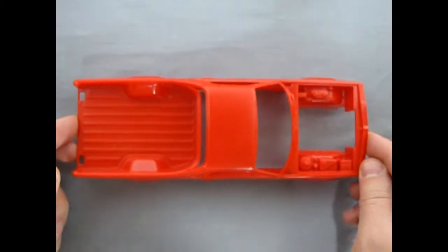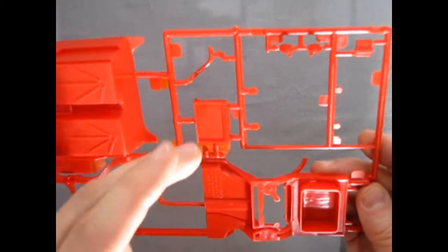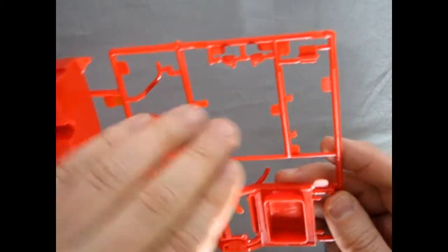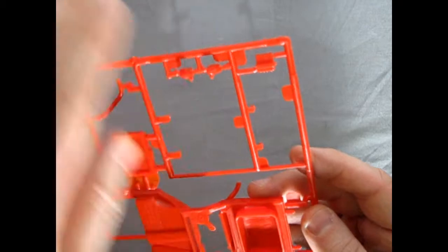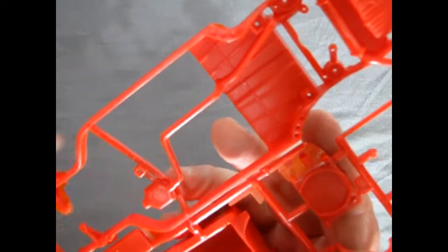Our next parts tree includes the frame, the interior bucket as well as the radiator, upper radiator hose, the two mirrors and our CB radio and if we just turn this over you can see how nice this is.